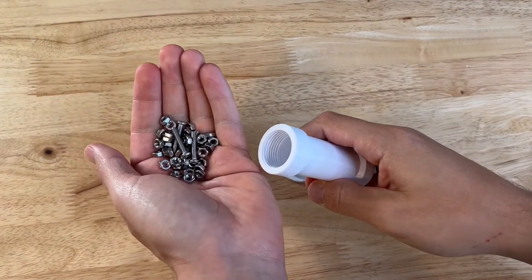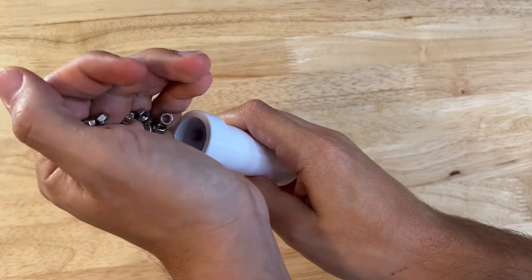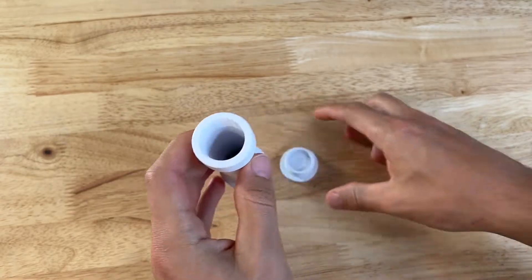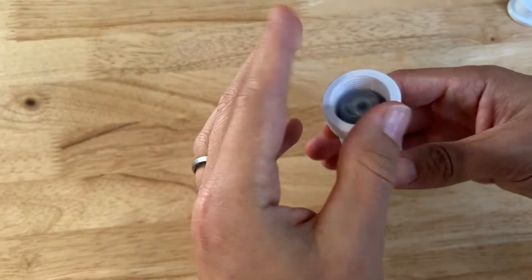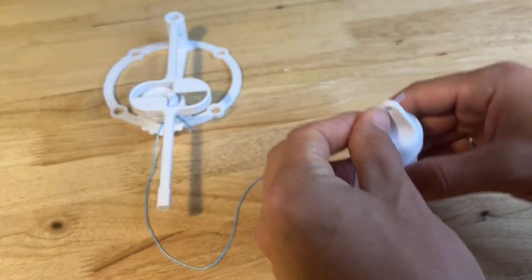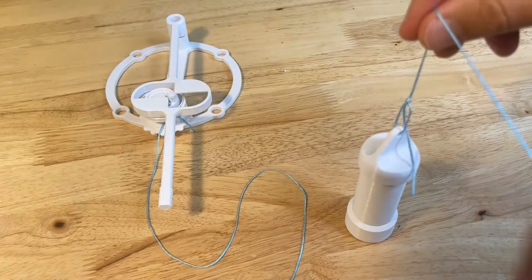Grab your fillable weight and fill it with some weight. Anything goes here, just stuff that's heavy enough to give it a little bit of mass. Could be extra hardware, ball bearings, extra bearings, and cap the end of it off. Tie the other end of the string through the top of the fillable weight and secure everything with a knot.